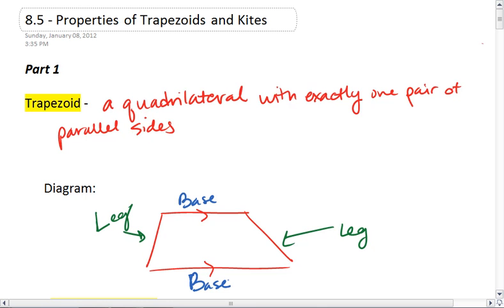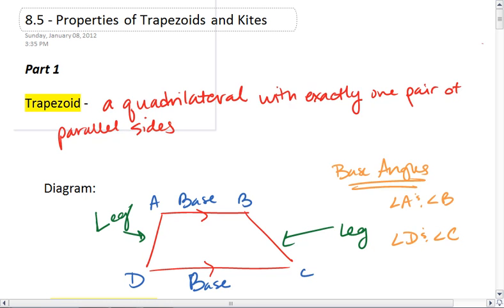We also have four angles, and we pair them up based on their bases. So in this picture are sets of what we call base angles. The pairs of base angles are angle A and angle B are one pair, and then angle D and angle C are the other pair of base angles. So we have our top two angles are one pair, and our bottom two angles are the other pair of base angles.